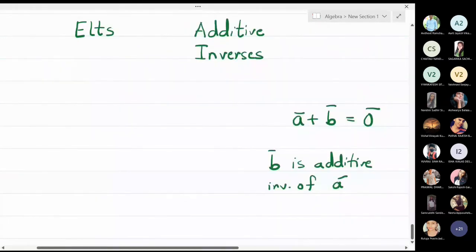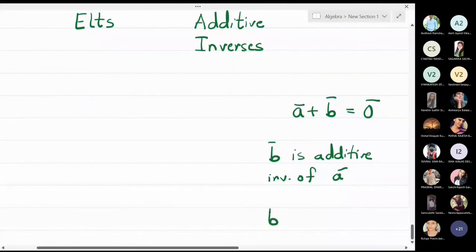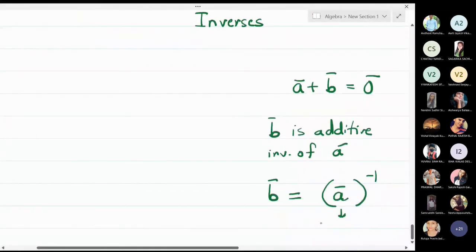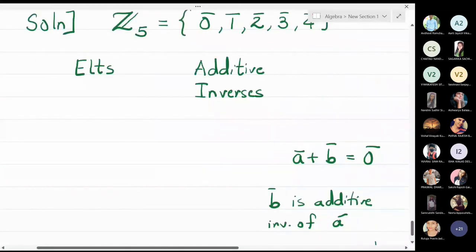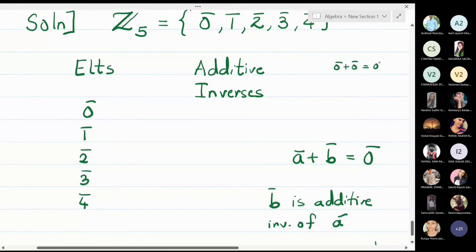We denote it as b̄ equals the inverse of ā — this is just a notation, it does not mean reciprocal. Now, looking at the elements of Z₅: 0̄, 1̄, 2̄, 3̄, and 4̄. Clearly 0̄ + 0̄ = 0̄, so the additive inverse of 0̄ is 0̄ itself. And 1̄ + 4̄ = 0̄, so the additive inverse of 1̄ is 4̄.